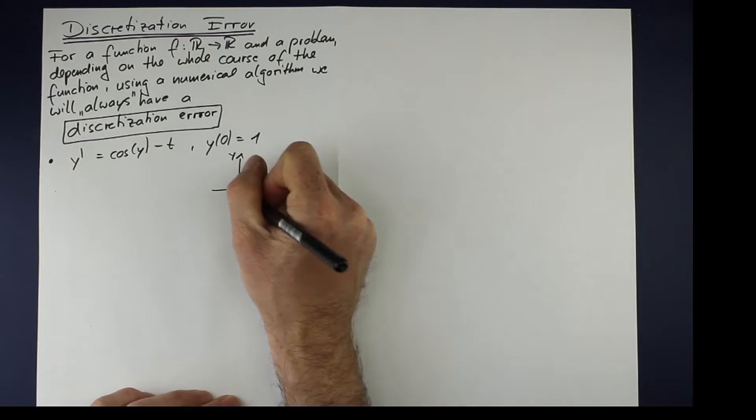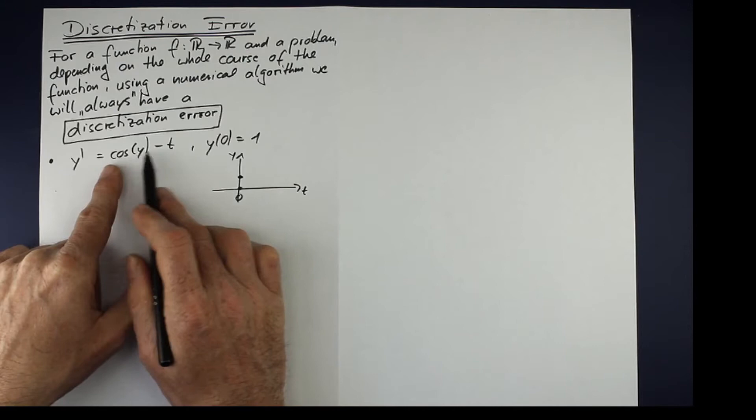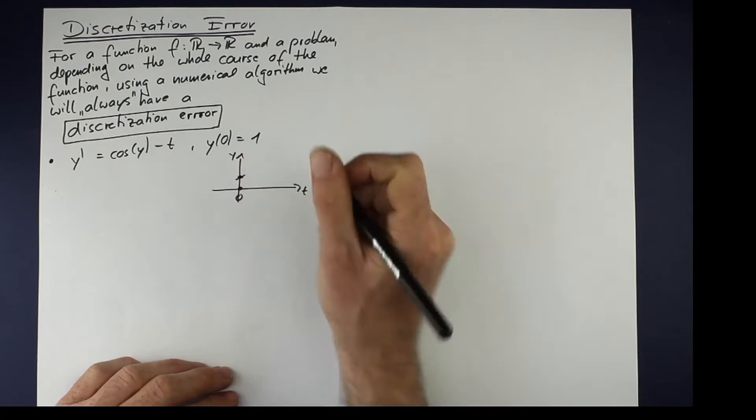We have for t is 0, we have the starting point 1 and then the slope comes from here. It's cosine 1 minus 0, what is 0.6, something like that. So the solution starts in that direction.